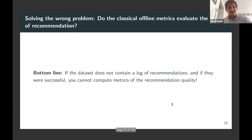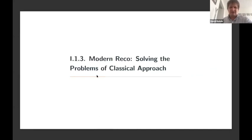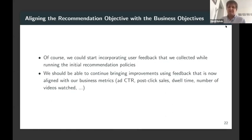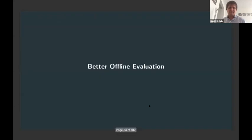The bottom line is: if the dataset does not contain a log of recommendations and whether they were successful, you can't compute metrics of recommendation quality — you're forced to make that implicit assumption. One way to do offline evaluation that actually does predict A/B test results is to use the IPS score. Once you've deployed a system and gathered click-through data, you may as well use it.